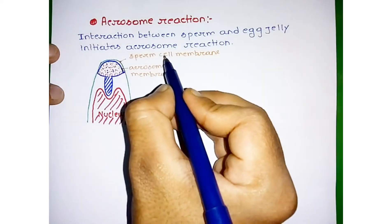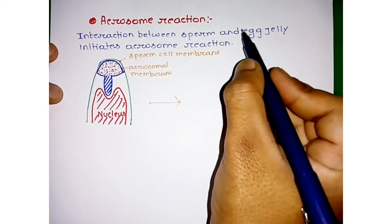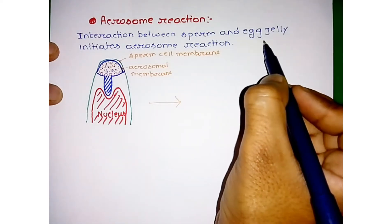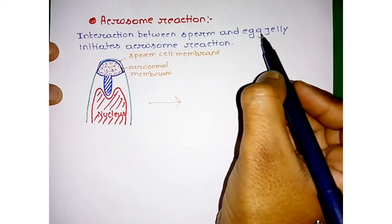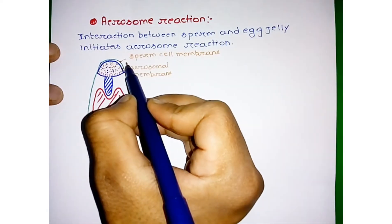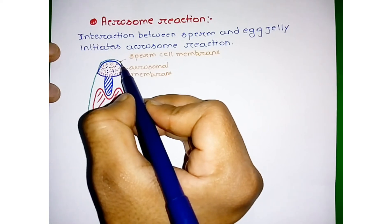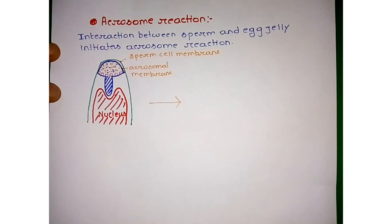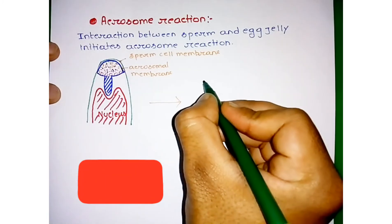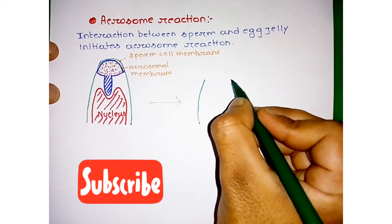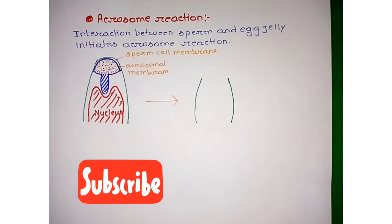In the case of sea urchin, the egg jelly contains a special type of structure called fucosulfate. This fucosulfate binds with specific receptors present on the sperm membrane, which leads to fusion of the acrosomal membrane with the sperm membrane. In the second step, the acrosome fuses with the sperm.